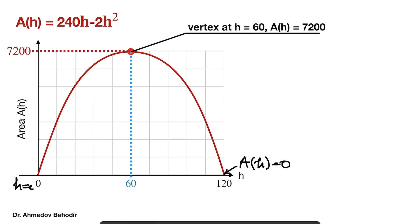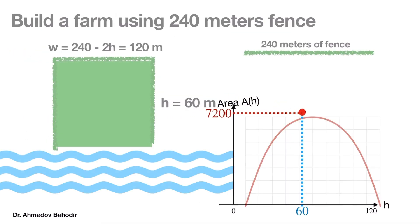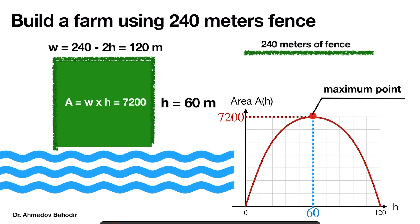We can solve this problem using various different approaches: by taking the derivative, setting it to zero, and analyzing the increasing and decreasing regions; by checking the second derivative to identify the maximum; or by recognizing the function as a downward-opening parabola and finding its vertex. This is how we solve optimization problems using the tools of calculus, and I hope this video was helpful for you.